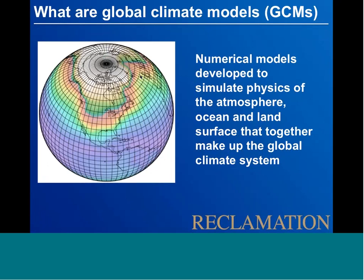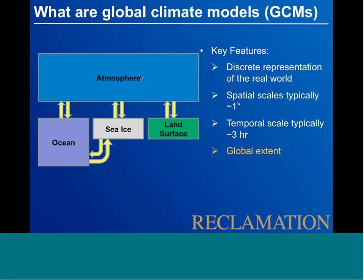We start with global climate models — numerical models simulating the physics of the atmosphere, ocean, and land surface across the entire globe. These include components for the atmosphere, ocean, sea ice, and land surface. There are many different global climate models developed by research groups around the world, and they continue to evolve with additional focus on biogeochemical cycling and other processes. It's a discrete representation of the world at roughly one-degree grid resolution, with pretty good temporal resolution at about three hours, and we have data for the entire world.